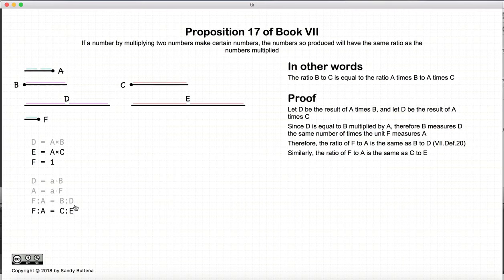And if we apply the same logic for A times C, we have that the ratio of F to A is equal to the ratio of C to E. Therefore, since the ratio of F to A is the same in both of these cases, then the ratio of B to D is equal to the ratio of C to E.